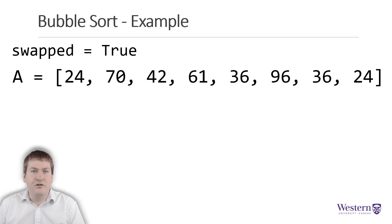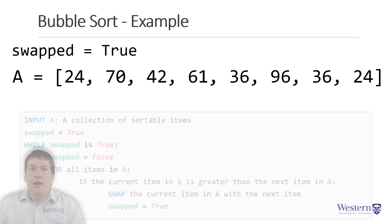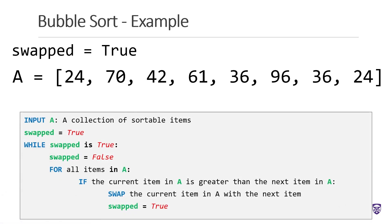So let's go through an example of running this algorithm and trace through to see how it works. When tracing through this algorithm, there are two main variables we want to keep track of. A is a list of sortable values — the input to our algorithm. The second variable, swapped, is a Boolean value that we use to keep track of whether we made it through the list without needing to swap any values. We need to know this because once we make it through the list without making any swaps, the list is sorted — so we know we're done.